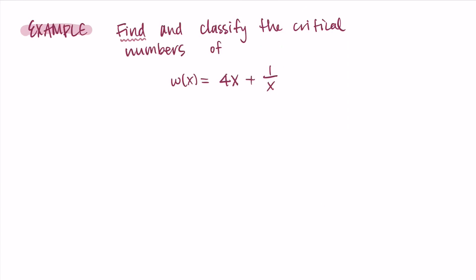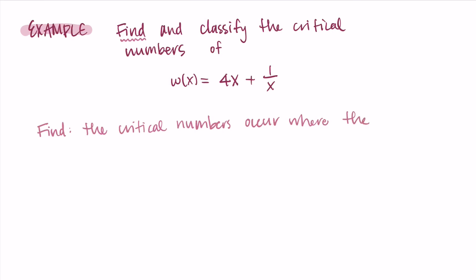First we're going to find the critical numbers, and the way we do that is by taking the derivative and setting it equal to zero. Along with that, we'll have to see if there are locations where the derivative is undefined that we need to include as critical numbers as well.